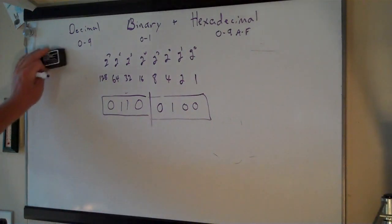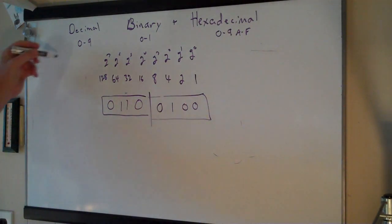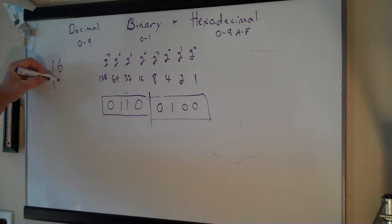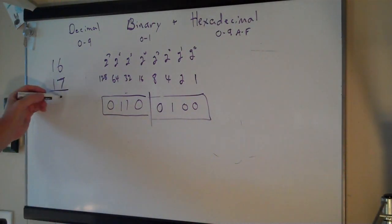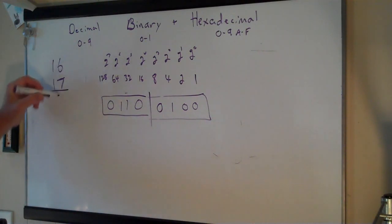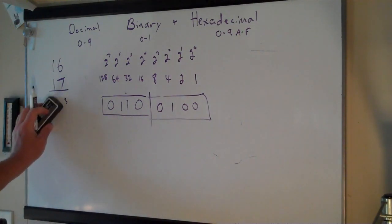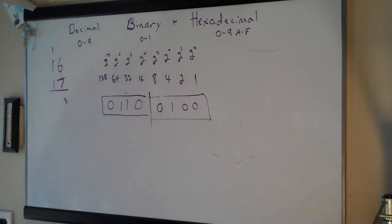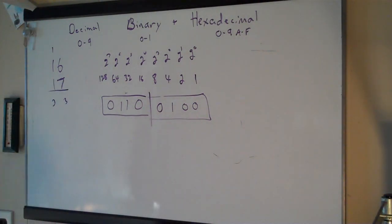Now let's talk about actually doing math in binary. When you do math in decimal, say you're adding 16 plus 17 — you add the 6 and the 7 and get 13. But you can't just write 13 because it's too big; it's a base 10 system and you can't go past 9. So when these add up to 13, you leave the last digit, the 3, and carry the 1. The same thing happens in binary.